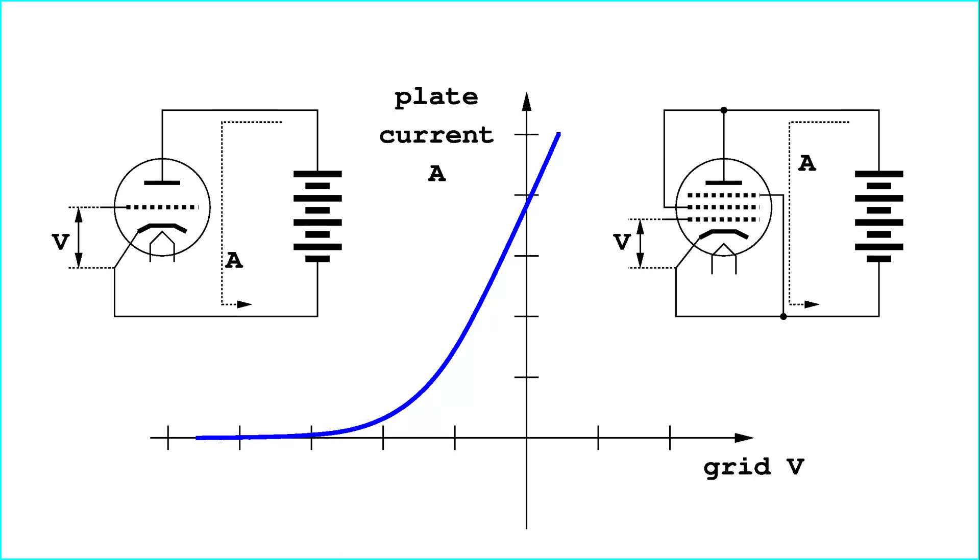The basic vacuum tube tracer described here is meant to associate the voltage applied to the control grid of a tube to the current flowing from the plate to the cathode. Therefore, the tube would be tested working only with the function of a simple triode.